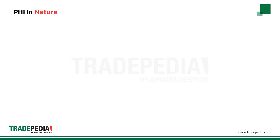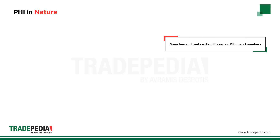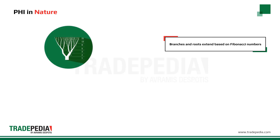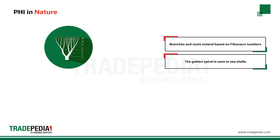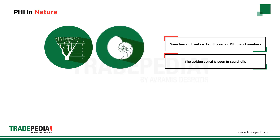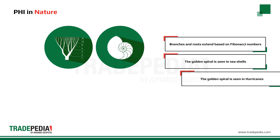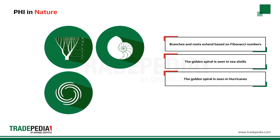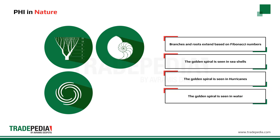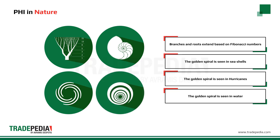Do you know where we find this golden spiral and rectangle? We find them everywhere in nature. For example, the branches and roots of a tree extend based on the Fibonacci numbers and subsequently the number phi. The shape of a seashell takes the shape of a golden spiral. Another case is a photo of a hurricane from a satellite — how it takes the shape of a spiral, but not just any spiral — it's a golden spiral. The same applies if you fill your bathtub with water and let the water flow down the drain; it flows in the shape of a golden spiral.